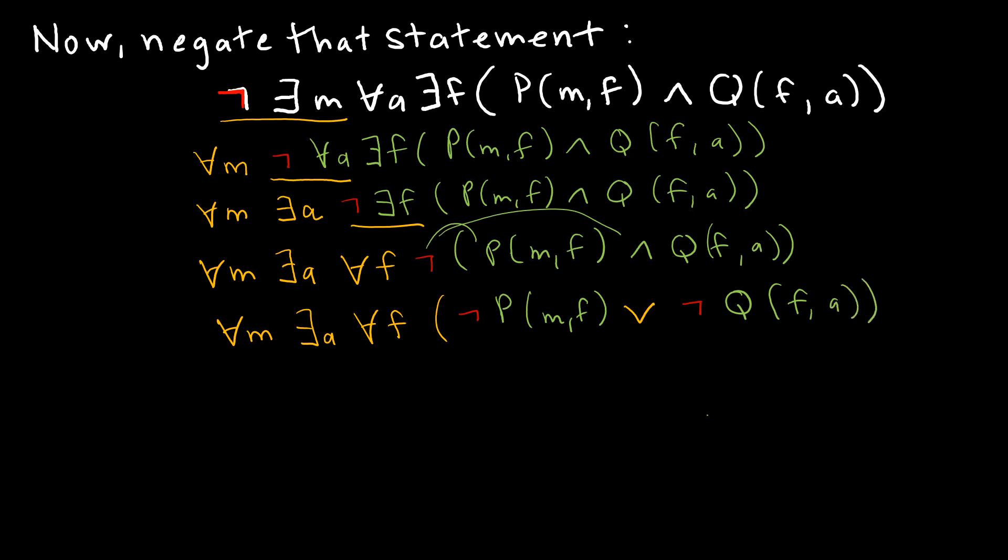So that is as far as I can go. So this is the negation of the statement. And what on earth does that mean? That means for all men, there exists or there is an airline such that for all flights, the man has not taken the flight or that flight is not on that airline.